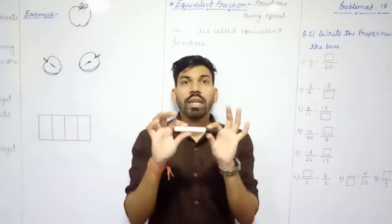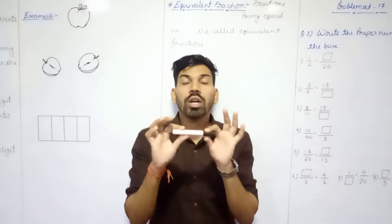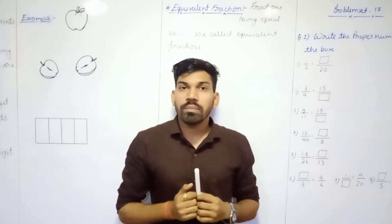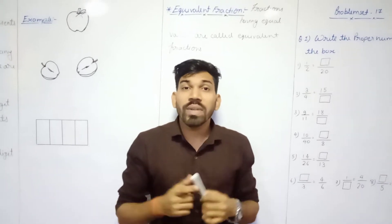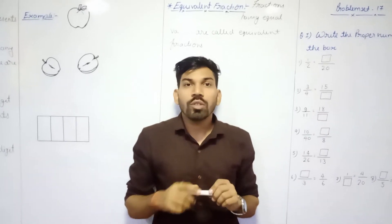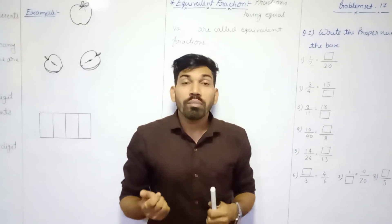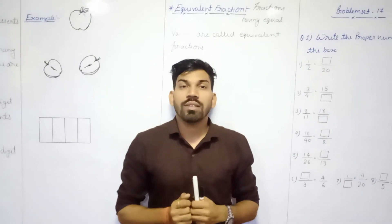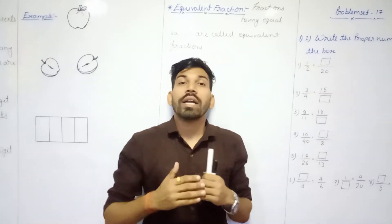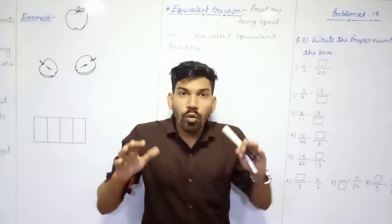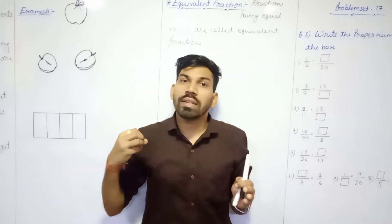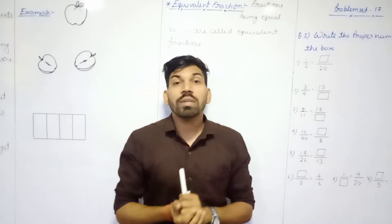And if I break this marker or cut this marker into 2 parts, at that time how many markers should I have? How can we represent that? As that one marker is divided into 2 parts, at that time we are using fractions. A fraction is a part of a whole. If we have any whole thing and we are taking a specific part of that, we represent it by a fraction.